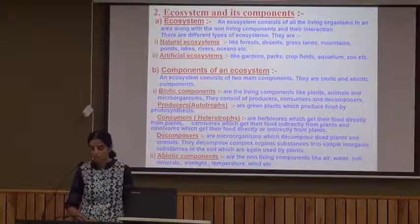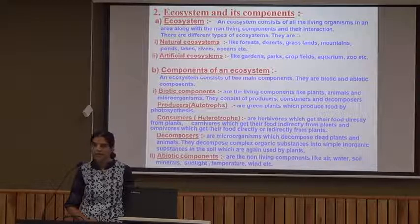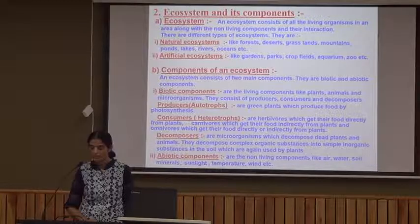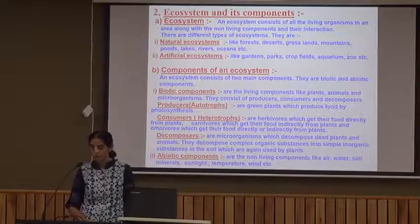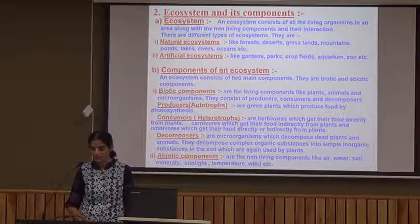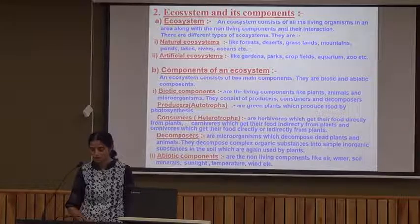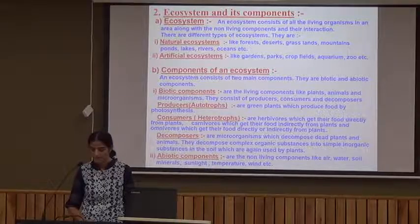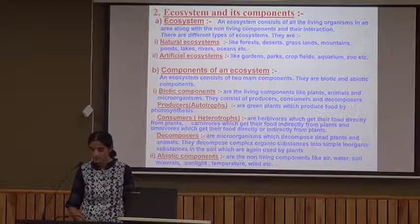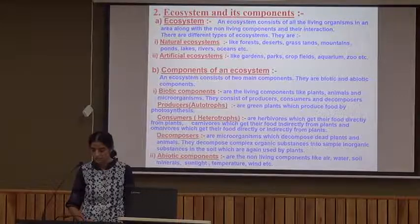Producers include all the green plants, called autotrophs, which prepare their own food. Consumers are heterotrophs which are dependent on producers for their food requirements, directly or indirectly. Decomposers are microorganisms which decompose dead plants and animals, breaking down complex organic substances into simple organic substances so that plants can use them again.